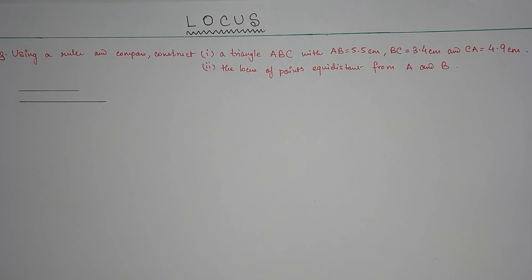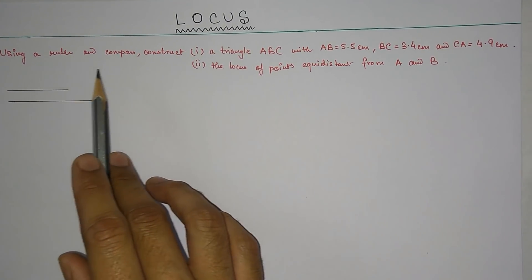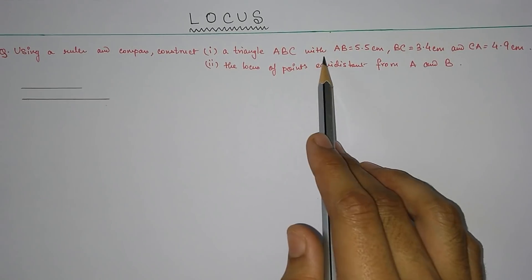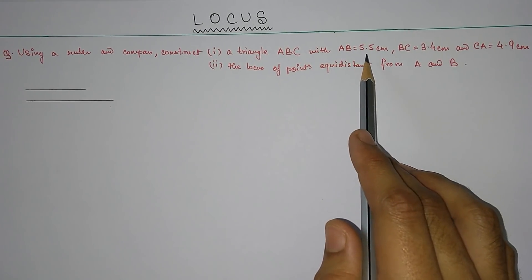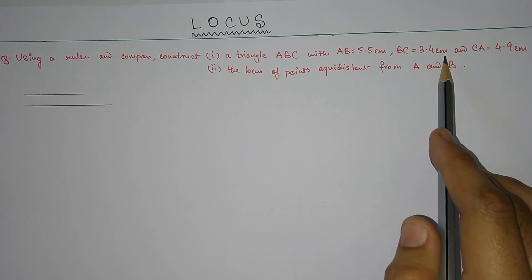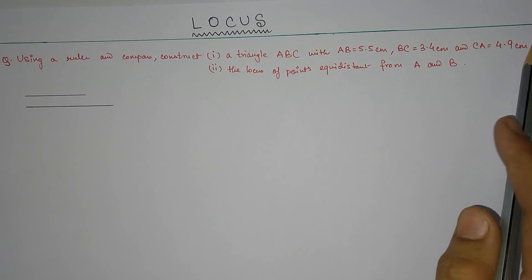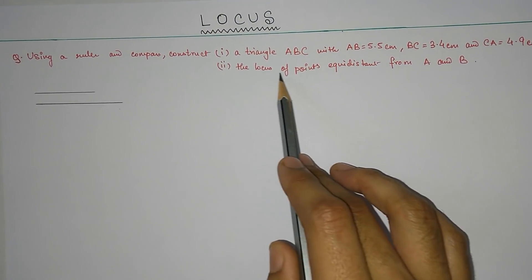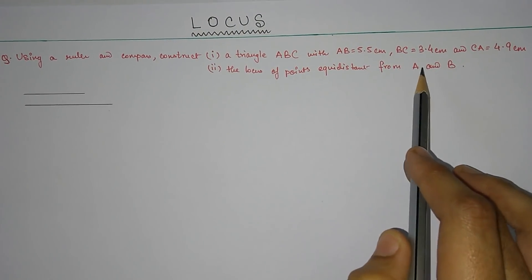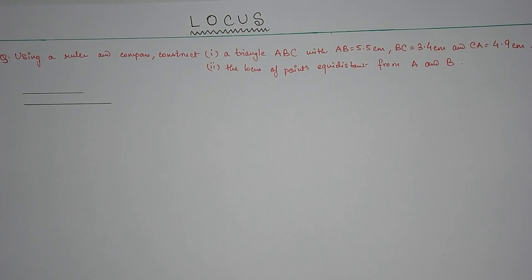Let's begin with the first question: using a ruler and compass, construct triangle ABC with AB equal to 5.5 cm, BC equal to 3.4 cm, and CA equal to 4.9 cm. Number two: find the locus of the points equidistant from A and B. This is the first question and it's an easy one.